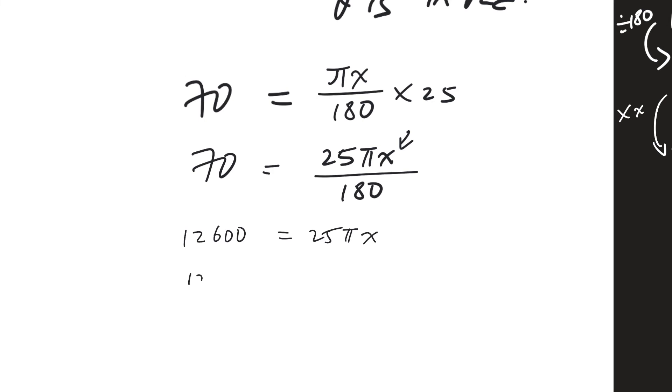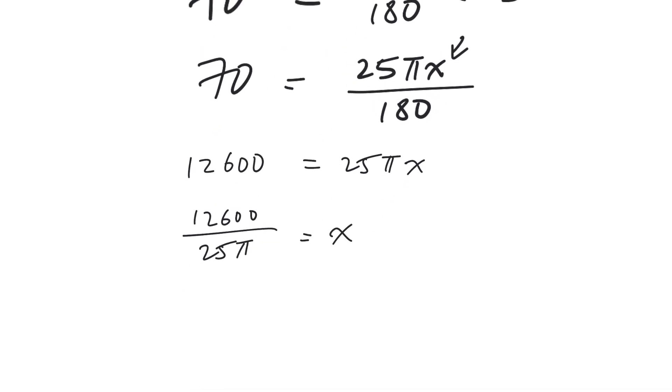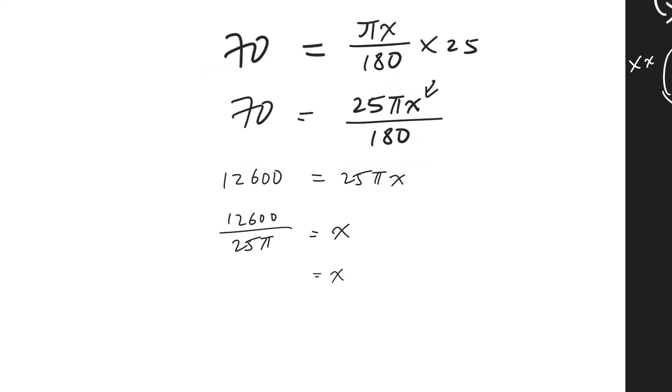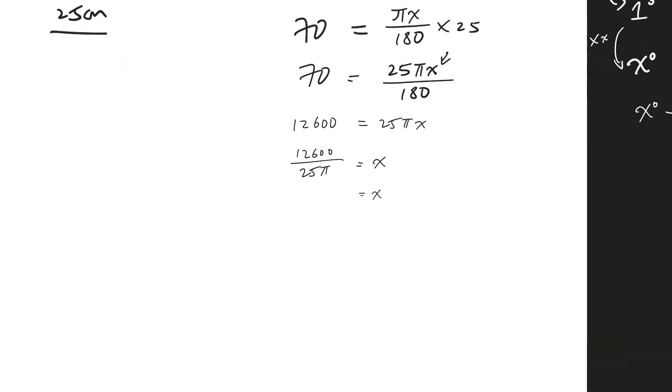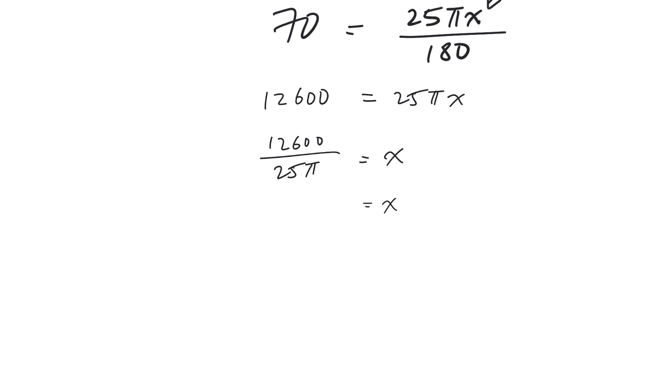And then I divide both sides by 25 pi to give me x. So there you go, x is simply this, but they told me use pi as 22 over 7, take pi as 22 over 7. So I'm going to say this is 12600 divided by 25 times 22 over 7. Key it all into a calculator, and what you get is 1764 over 11.